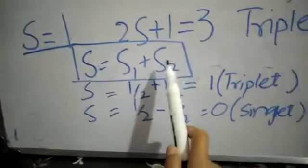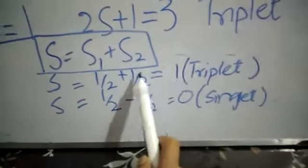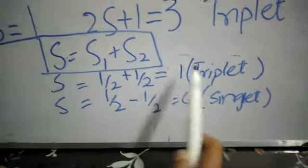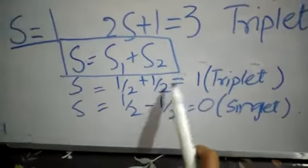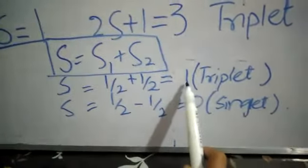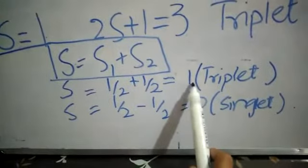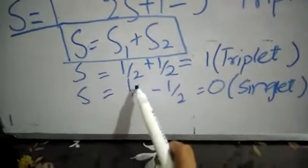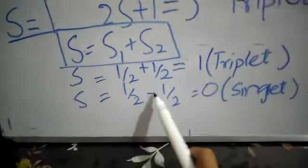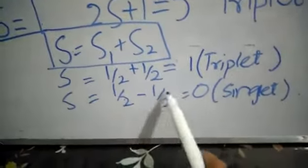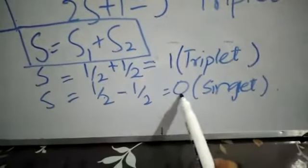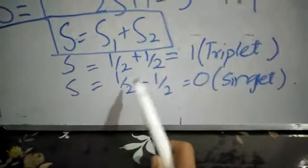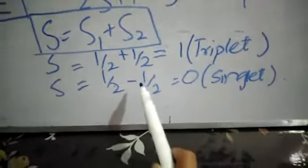As we see, we know that if s equals 0, then it is a singlet state. If s equals 1, then it is a triplet. We also know that s is the sum of s1 and s2, where s1 is one-half and s2 is one-half for the parallel spin. This is 1, and parallel spin means that the wave function will be symmetric, which corresponds to the triplet state.